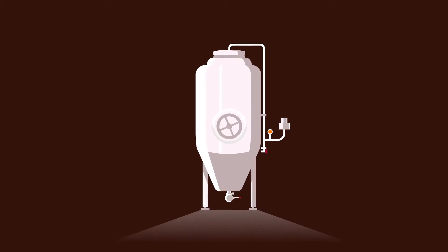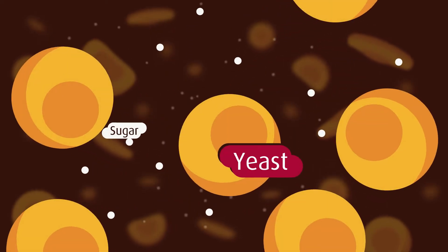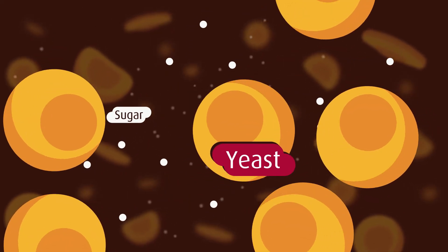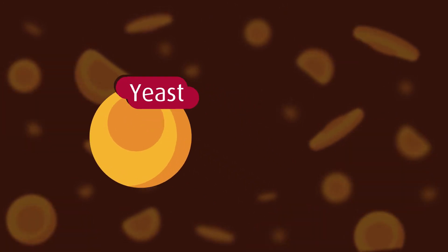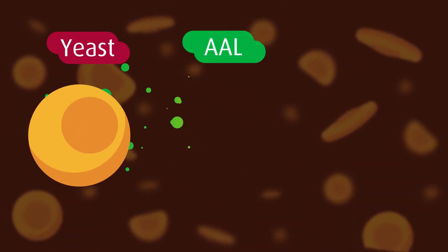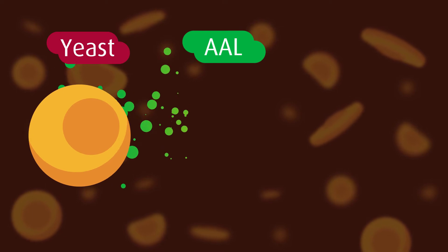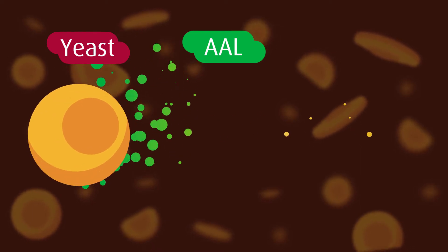At the beginning of fermentation, billions of yeast cells convert sugar into alcohol and carbonation. At the same time, the yeast is rapidly producing alpha-acetylactate, or AAL, a flavorless byproduct of fermentation.